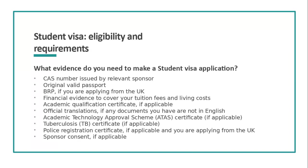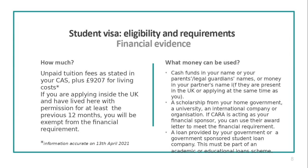Depending on where you're applying from, you may need a TB certificate. If you are making your application from inside the UK and your nationality requires police registration, you will need to submit a police registration certificate with your current visa, passport, and UK address. If you have financial sponsorship from your home government or an international scholarship agency, you will need a letter of consent to make the application and remain in the UK.